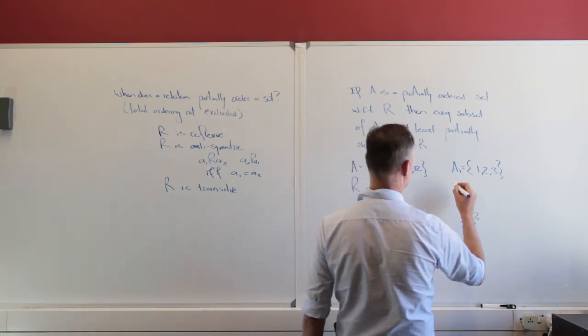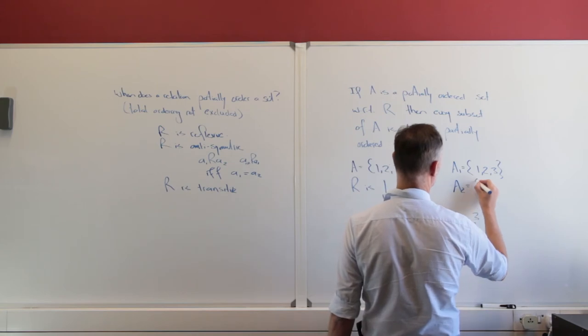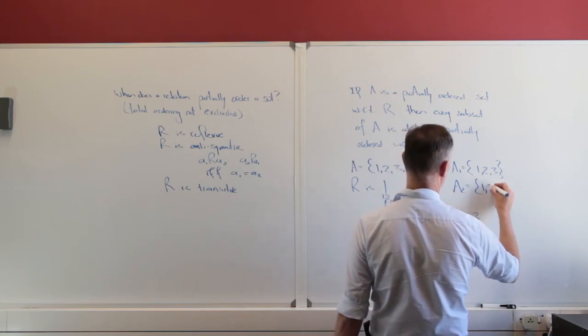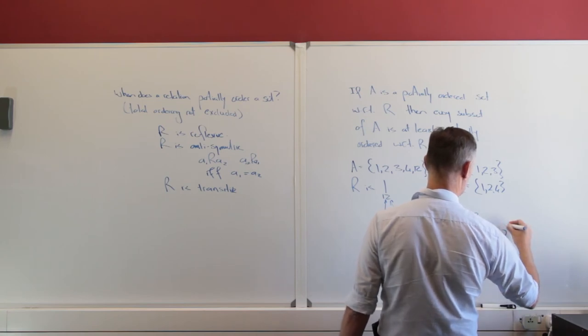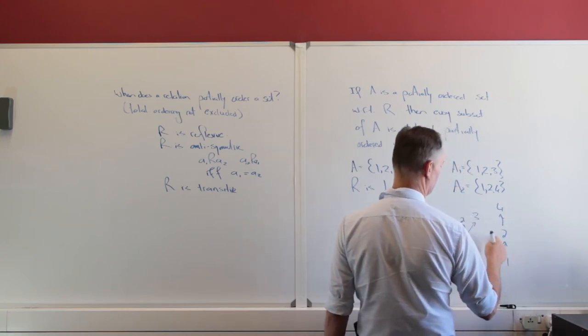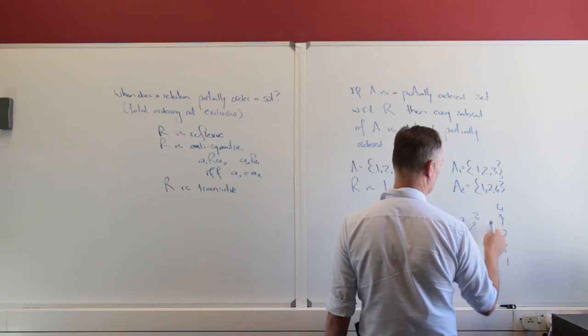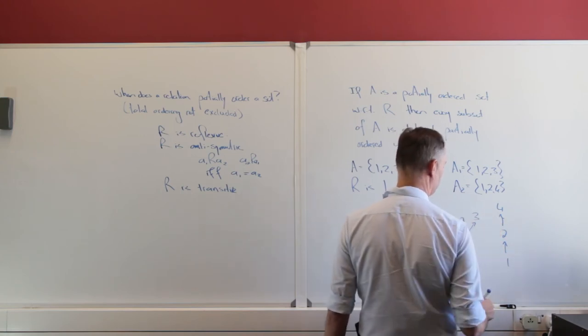But I can have the subset, let's make the subset a2 and that subset might be 1, 2 and 4. And certainly I have 1, 2 and 4, 1 divides itself, 1 divides 2, 1 divides 4, 2 divides 4 and 2 and 4 divides 4.